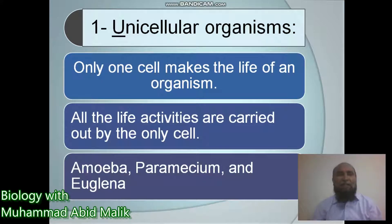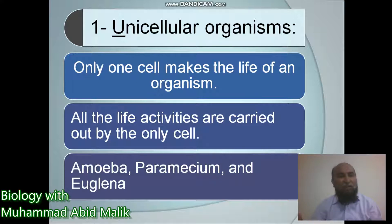Unicellular organization involves unicellular organisms — only one cell makes up the life of an organism, and all life activities are carried out by that single cell. Examples of unicellular organisms are Amoeba, Paramecium, and Euglena.